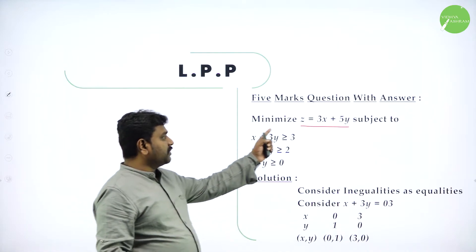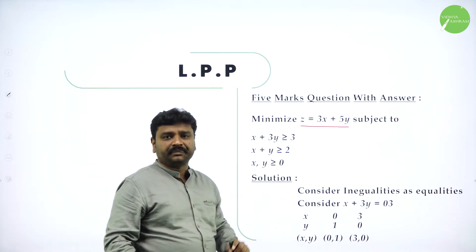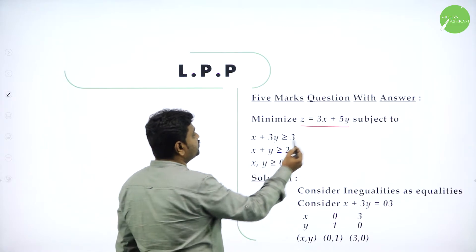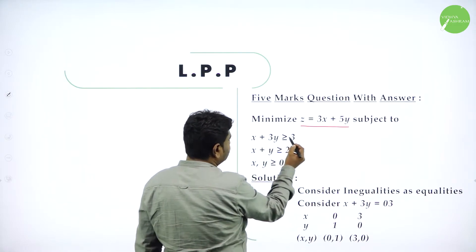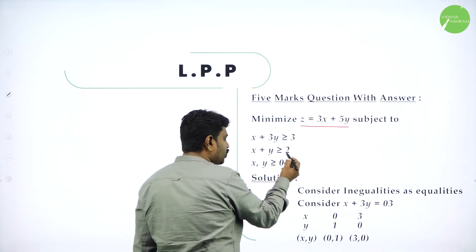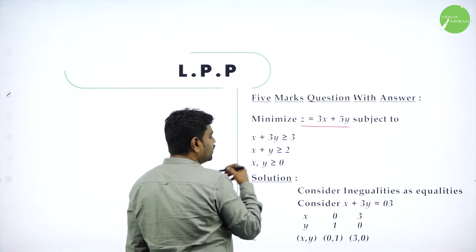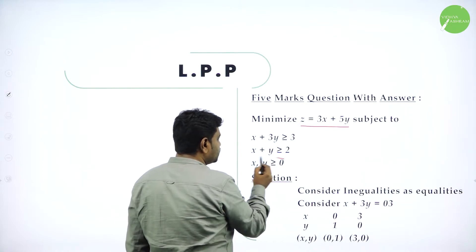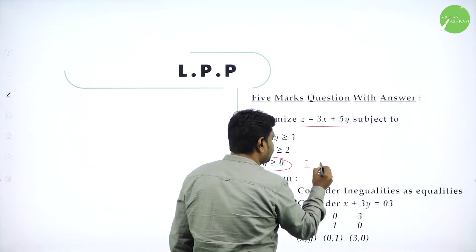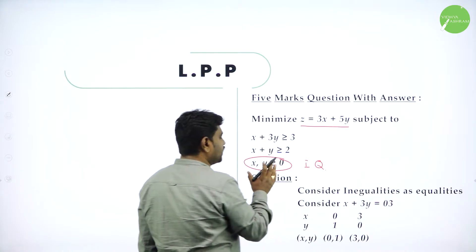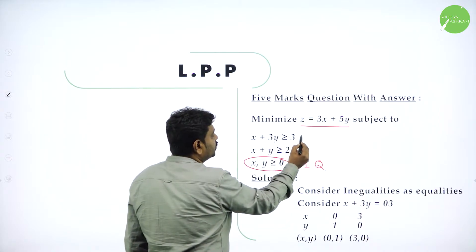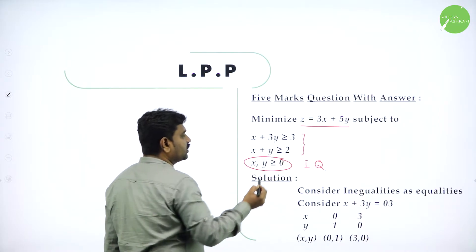They want you to minimize, so this is the objective function. Whenever any problem is given, read the conditions subject to. They give three conditions: one is X plus 3Y greater than or equal to 3, second is X plus Y greater than or equal to 2, and third is X, Y greater than or equal to 0. Dear students, this condition X, Y greater than or equal to 0 is given in every problem — it means the graph should belong only to the first quadrant. So no need to draw this; these two constraints you should draw the graph.